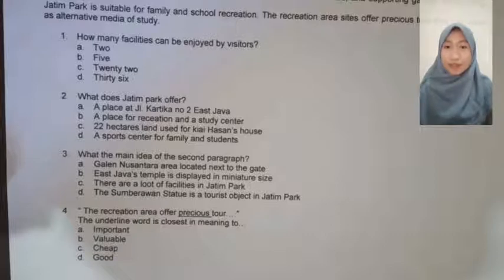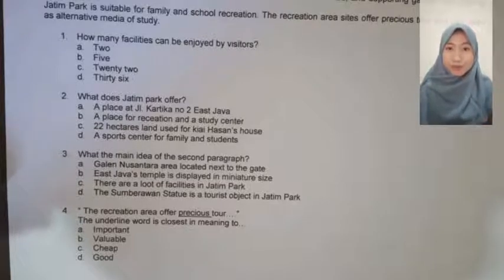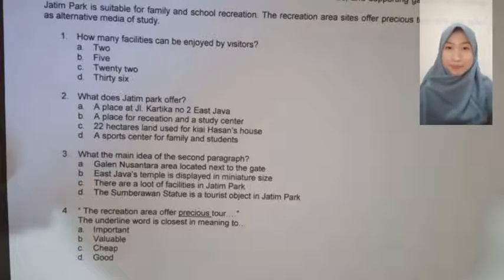Pada nomor satu, kita dapat melihat pada paragraf kedua ada kalimat: 'Visitors can enjoy more than 36 kinds of facilities.' Jadi, ini menunjukkan jawaban kita, yaitu D. 36.